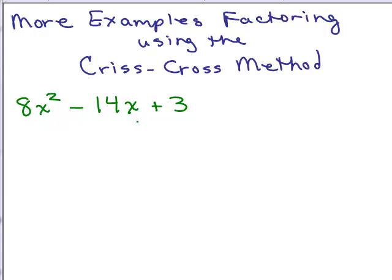We're going to try factoring 8x squared minus 14x plus 3 using the crisscross method, which is explained in another video. We take the factors of 8 and the factors of 3. Since it's a plus 3, we know we have the same sign, and since the middle term is negative 14, we know we're going to have two negative signs. So what are some possibilities for 8? We could use 8 and 1 or we could use 4 and 2.